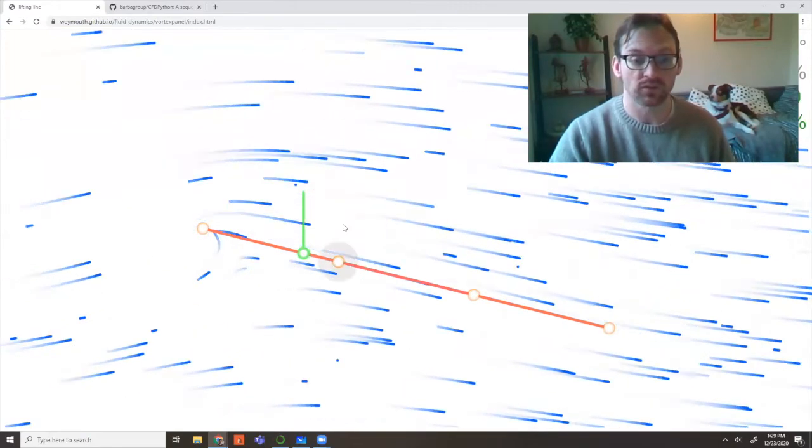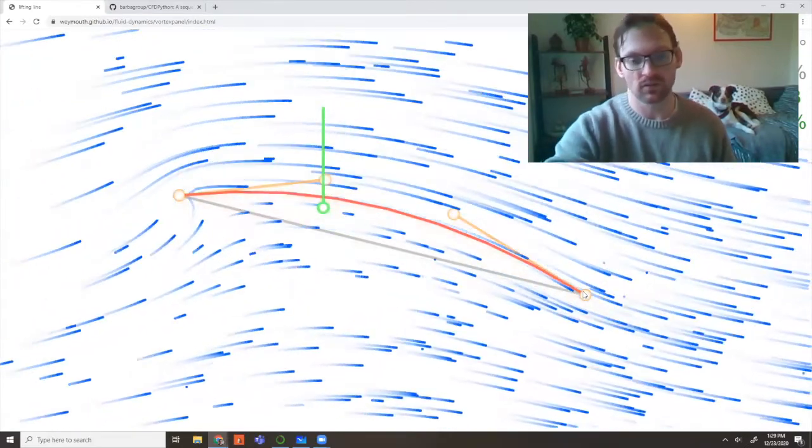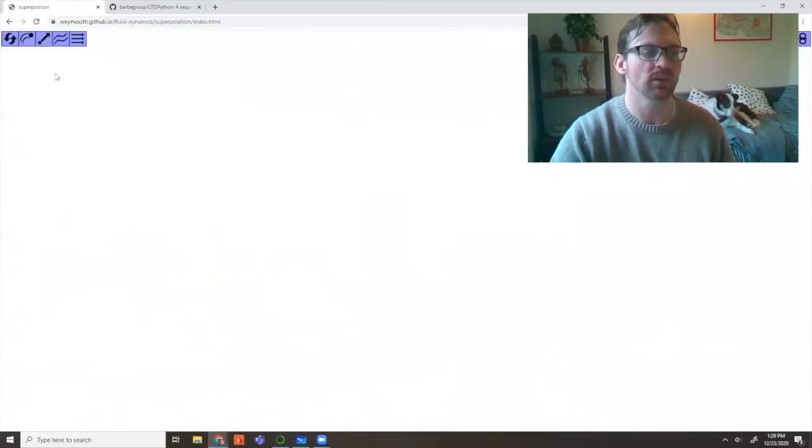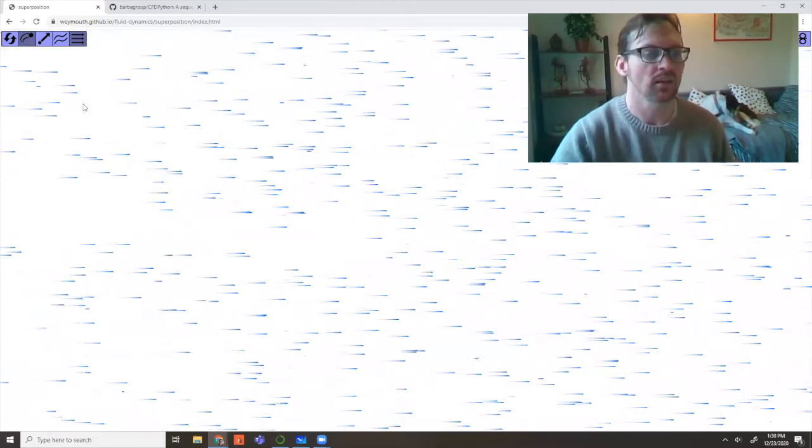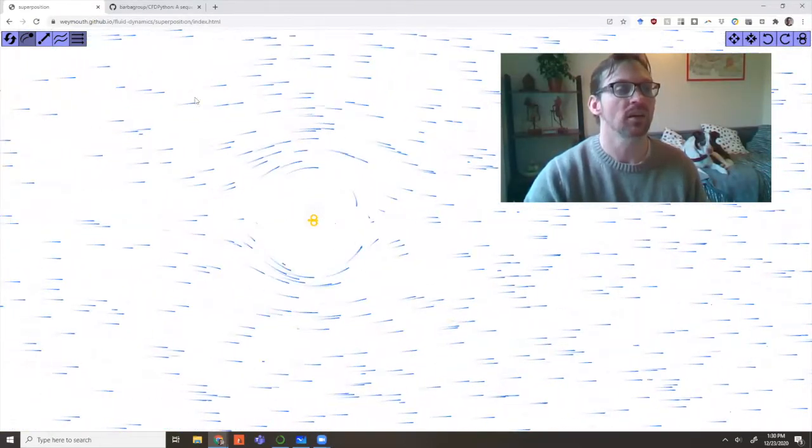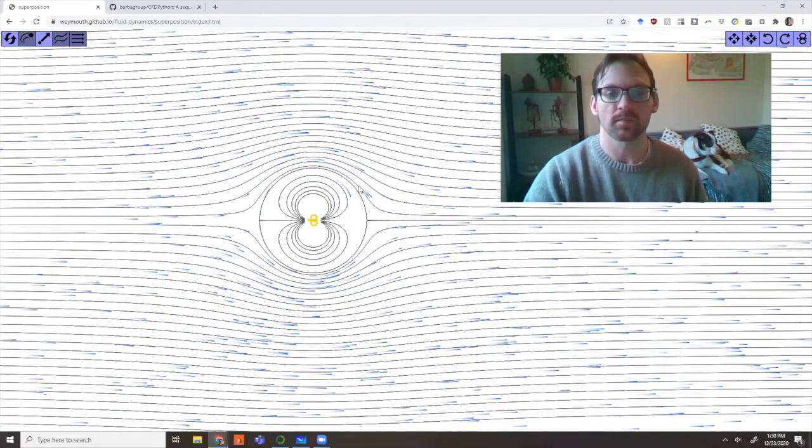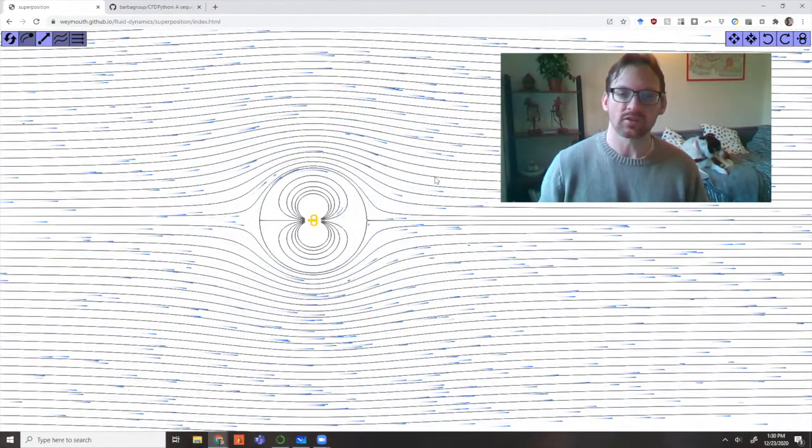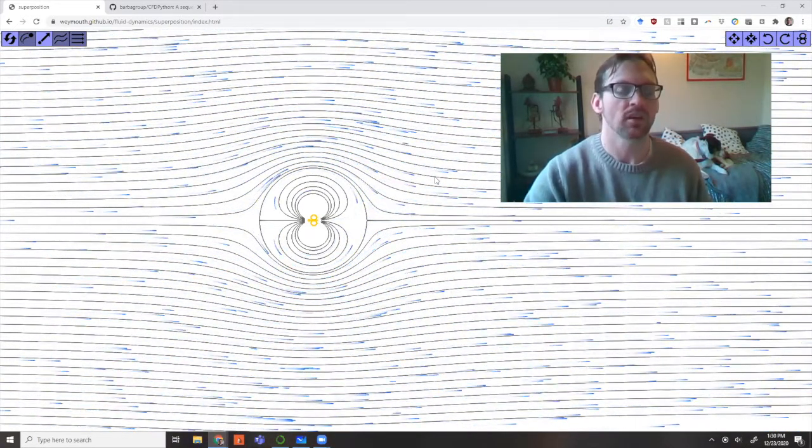This is a potential flow app and we can move around this little object and see the flow going around it. We can also do a superposition of basic potential flows. This is a uniform flow that just moves everything left to right, and then I can add on a doublet which gives me the flow around a circle.